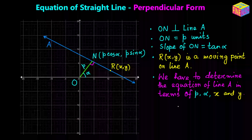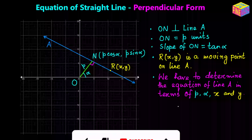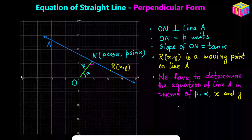Hi everyone. Apart from doing the ACT math practice problems, recently I have been trying to complete all the topics of the equation of a straight line. In this video I am going to discuss how to derive the equation of a straight line in the perpendicular form. The perpendicular form is also sometimes called the normal form — some authors use one term, some the other, but they both mean the same thing.